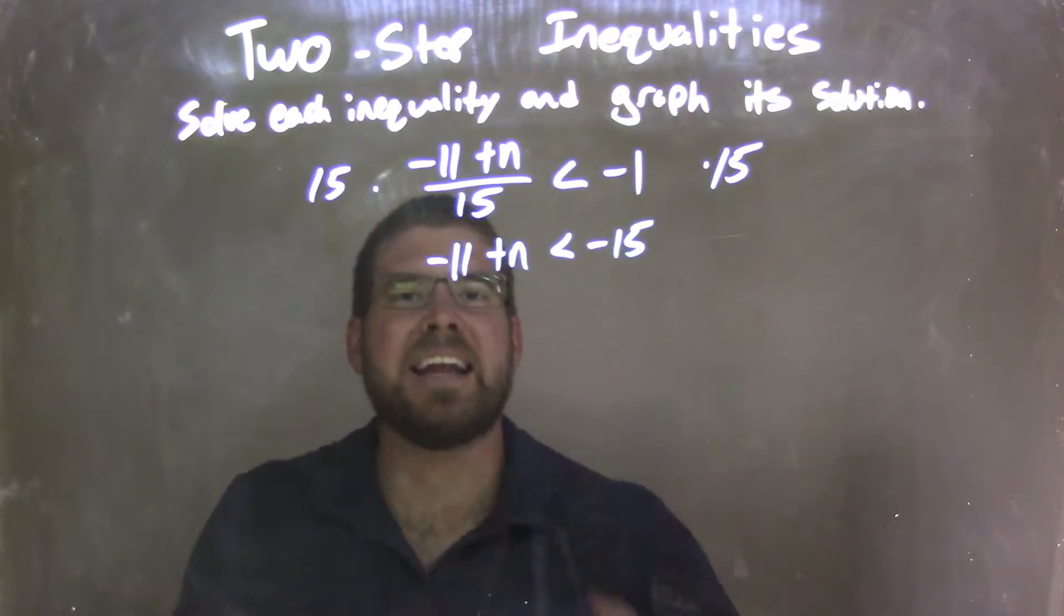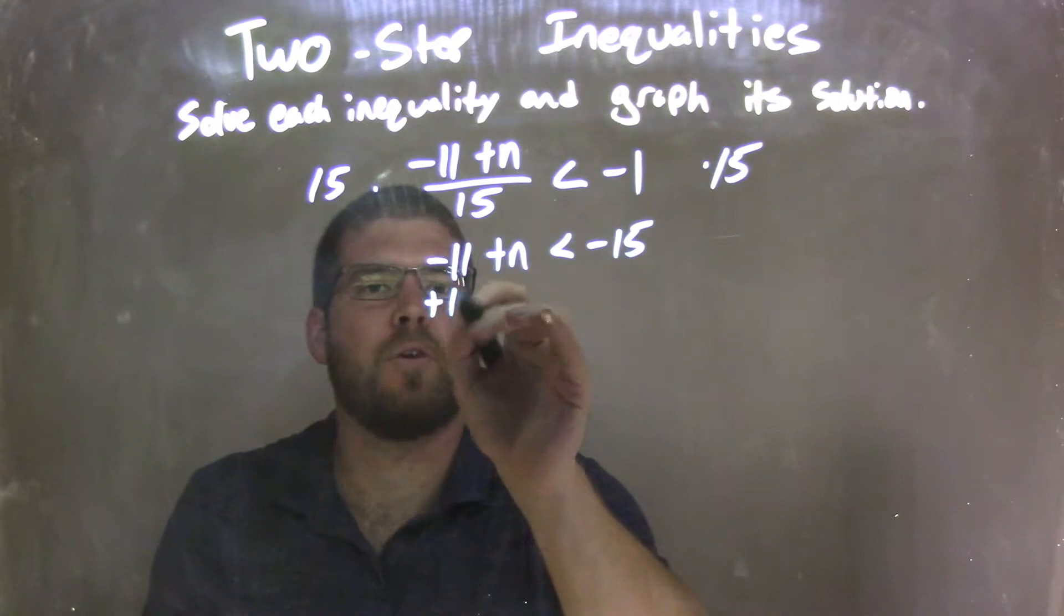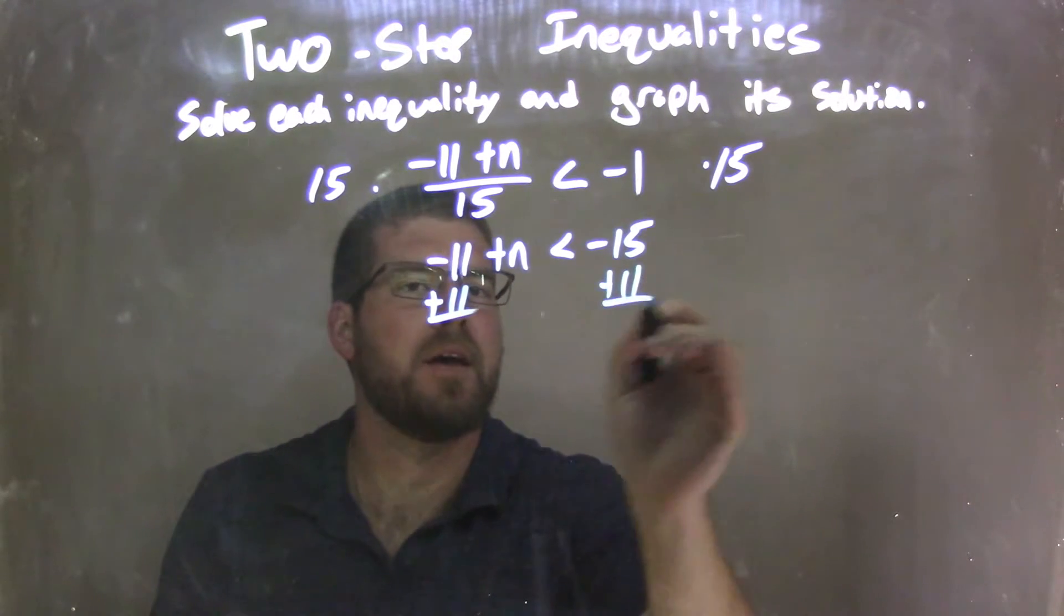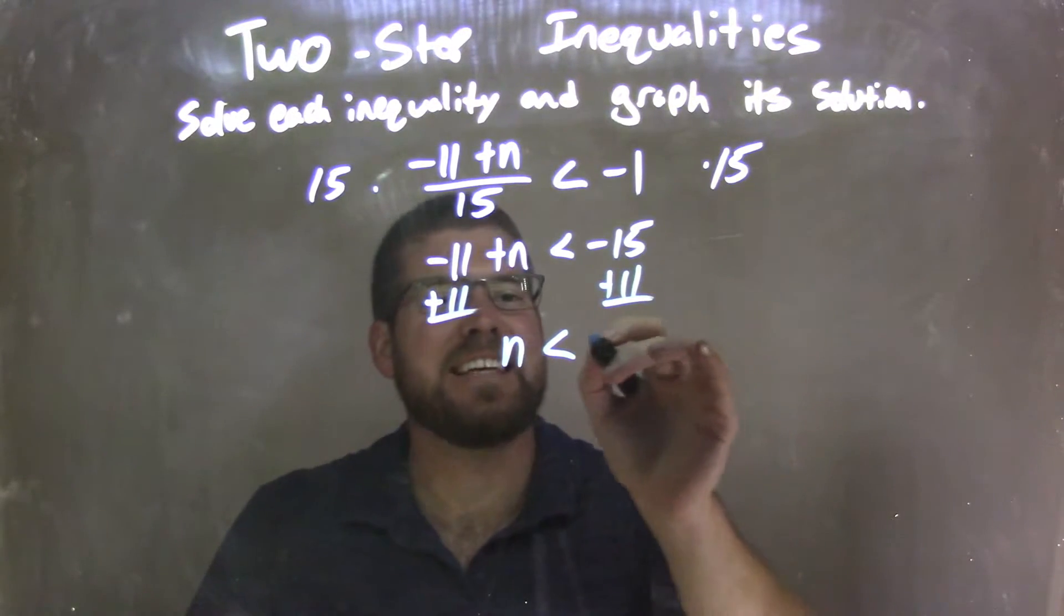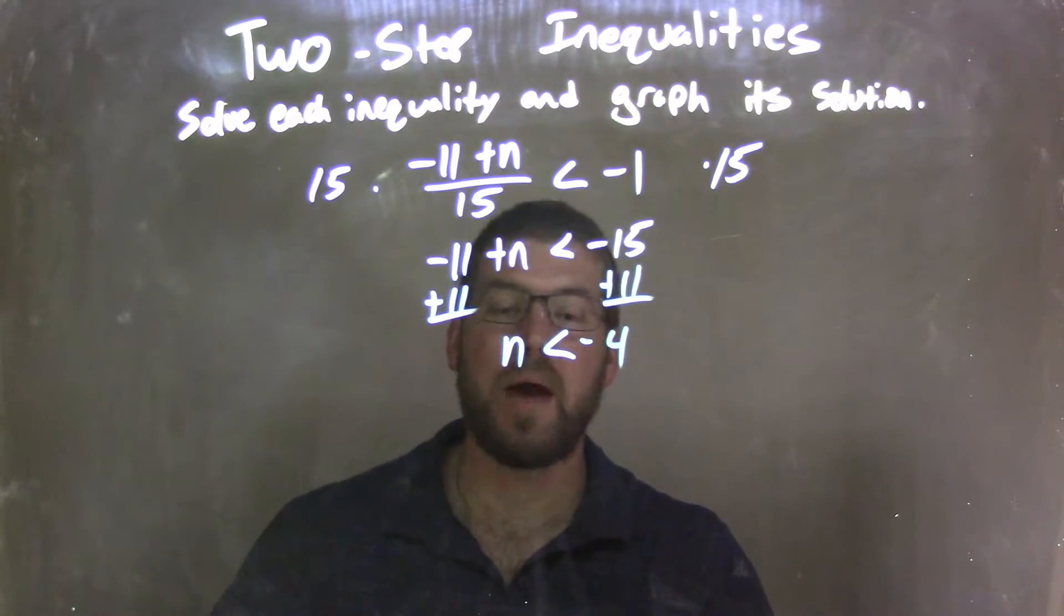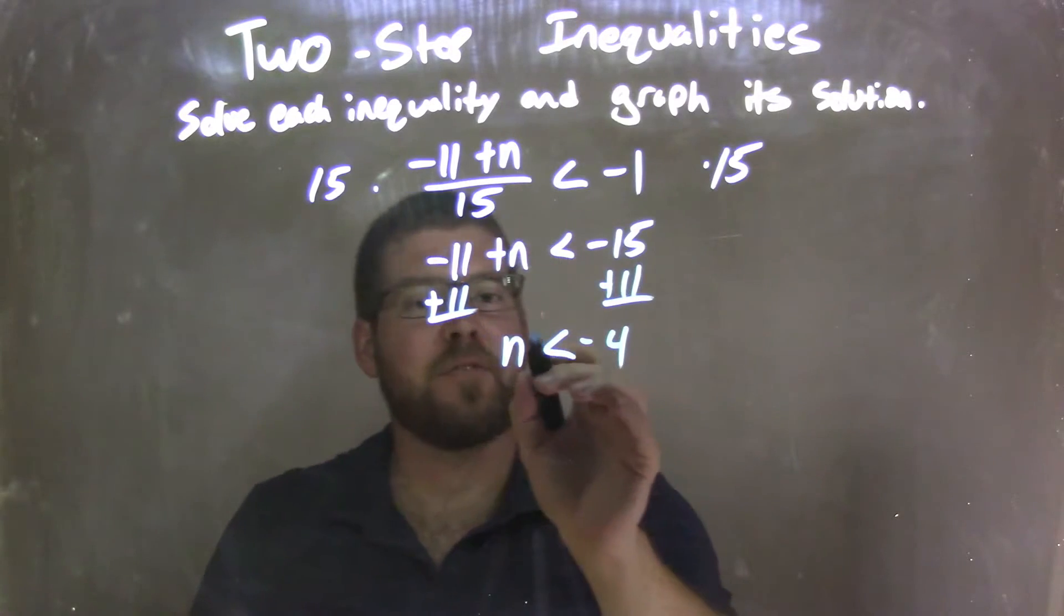From there, I need to add 11 to both sides. Adding 11 here leaves me with n by itself on the left, and negative 15 plus 11 is negative 4. So n is isolated and it's less than negative 4. That's great.